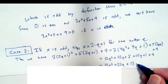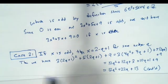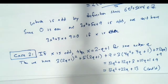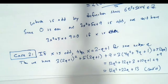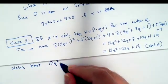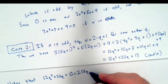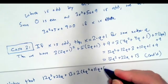I'm going to go ahead and rewrite this, continuing on the next page. Notice that 12q squared plus 22q plus 13 is equal to 2 times (6q squared plus 11q plus 6) plus 1.